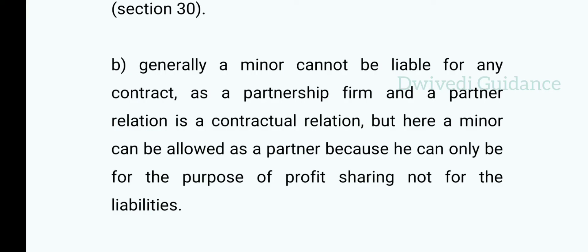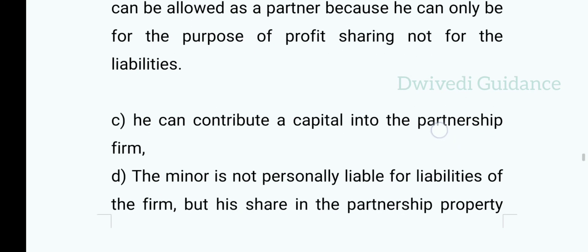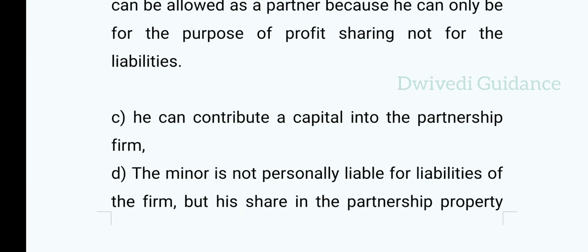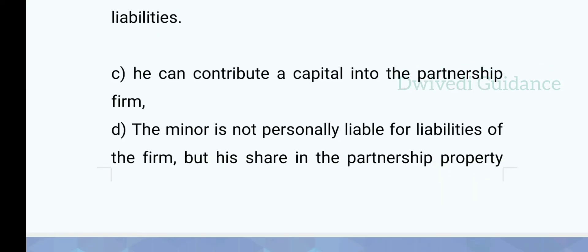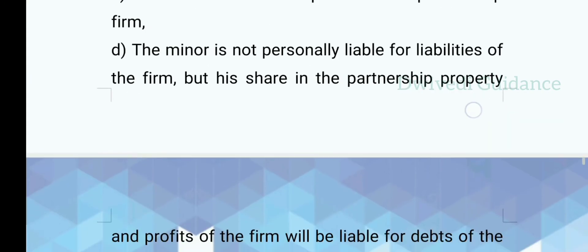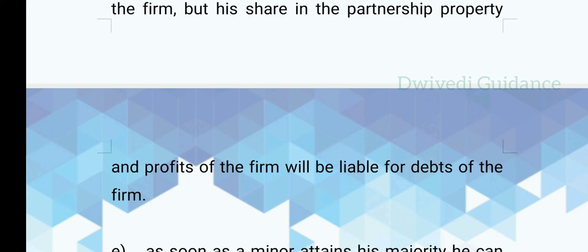The partnership and partner relationship is a contractual relation, and a minor is not capable of entering a contractual relation. However, the Partnership Act has allowed it — a minor can become a partner, but no liability will be imposed. It will only be for profit. The minor is not personally liable for the liabilities of the firm, but his share in the partnership property and profits will be liable for the debts of the firm.